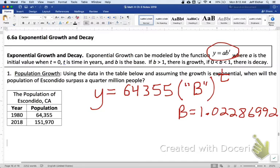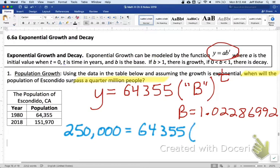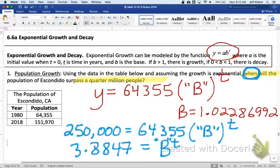And now that I have that, I can answer the question, when will? When is a time question, so I'm solving for t. When will the population surpass a quarter million people? So, a quarter million, we'd have 250,000 is the same as a quarter million, equals 64,355 times that b that I have saved in my calculator, raised to the t. Again, when is a time question, so our variable we're solving for is t for time.